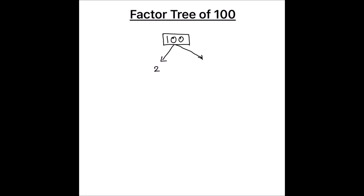One of the factors will be two. Two times fifty is one hundred, so the other factor is fifty. Now out of the two factors, two is a prime factor, so we are going to circle the prime factor, and then divide the other factor which is fifty.